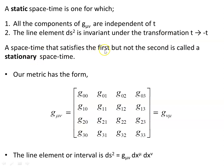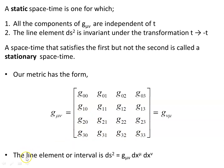A spacetime that satisfies the first condition but not the second is called a stationary spacetime. Our metric has to take this form, and we're looking to determine in this video what these terms should be. It's symmetric under reversal of the indices, and ultimately the metric we will find will be a diagonal one — all the off-diagonal terms will be zero. The line element or interval ds² is in this form here.